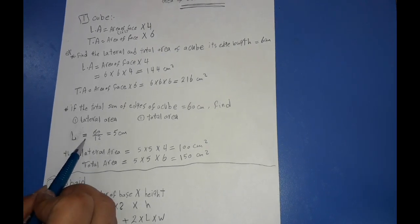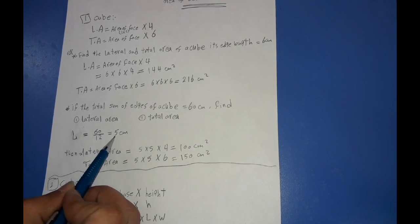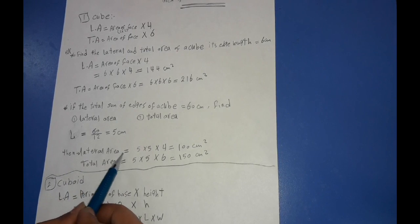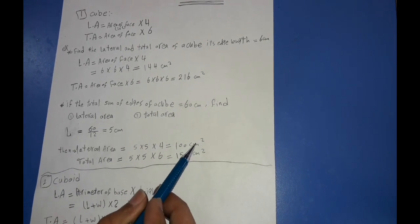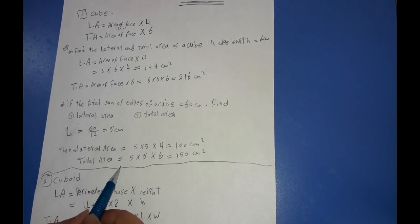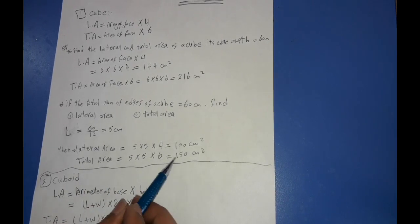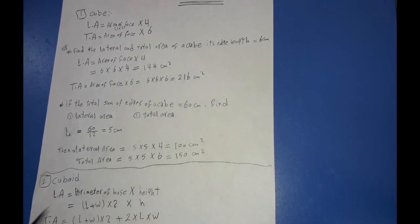Edge length equals the sum of edges divided by 12 (the number of edges), equal to 60 ÷ 12 = 5 cm. Then the lateral area equals 5 × 5 × 4 = 100 cm², and the total area equals 5 × 5 × 6 = 150 cm².